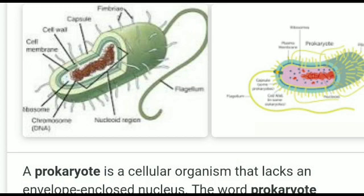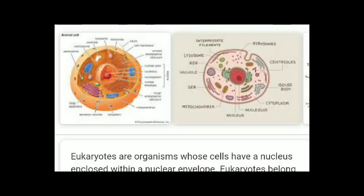This system includes organisms that lack an envelope-enclosed nucleus — these are called prokaryotes. The envelope-enclosed nucleus is not present in prokaryotes. In eukaryotes, there are organisms that have a nucleus enclosed within a nuclear envelope. In eukaryotes, there are cells with a nucleus inside an envelope.